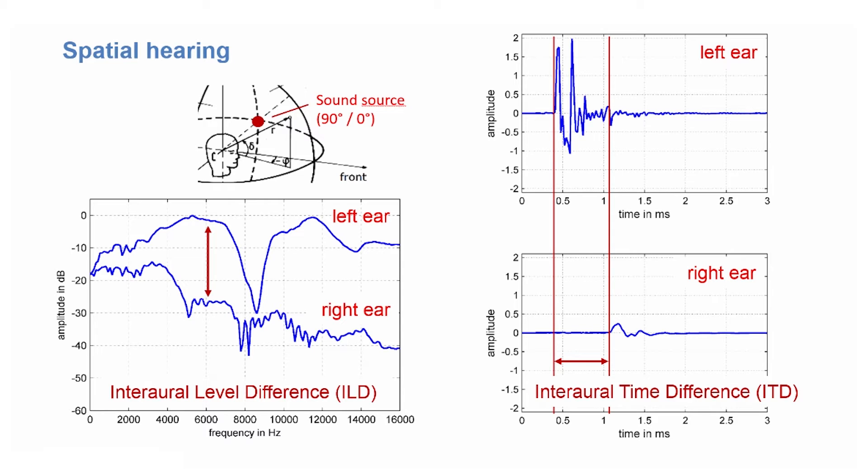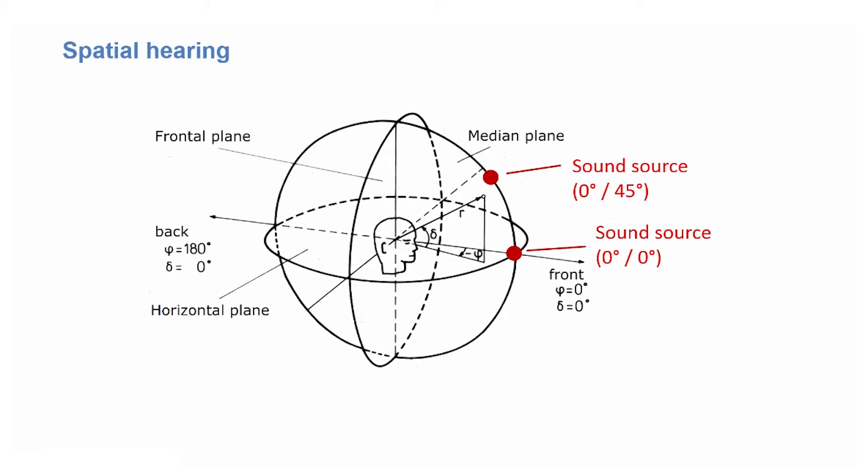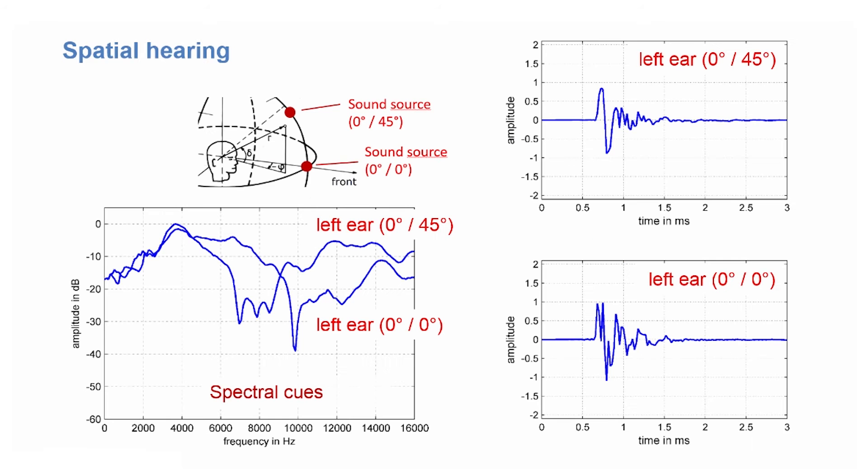An additional cue, which for example helps to distinguish different elevations with the same ITD and ILD, comes from the spectral shape of the HRTF. If we compare the HRTFs of two sources both in front of me at different elevations, and this time only the left ears, you see that these are quite similar in time and level, but different in their spectral shape. So spectral properties are an additional cue in localization.